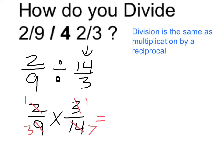I'm going to multiply numerator times numerator, which is simply one, and denominator times denominator, which is twenty-one. So the answer is one over twenty-one. That means that one twenty-first of the number four and two-thirds is equal to two-ninths.